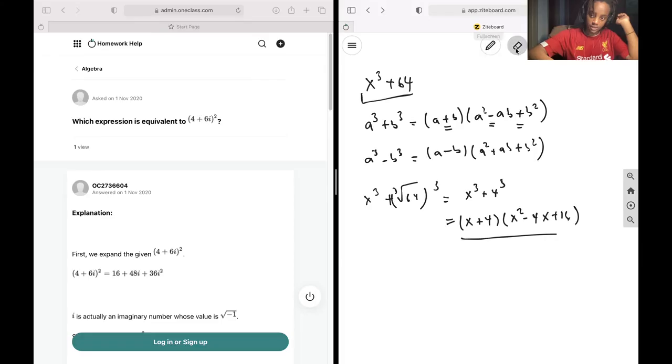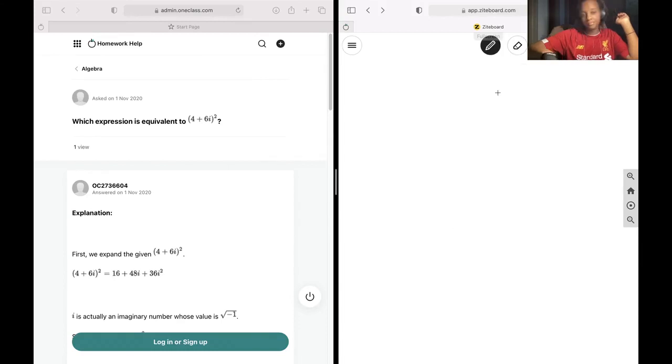This is our final question. We want to find an expression equivalent to (4 + 6i)² and we can do that by expanding it out. So (4 + 6i)² is (4 + 6i) multiplied by (4 + 6i).